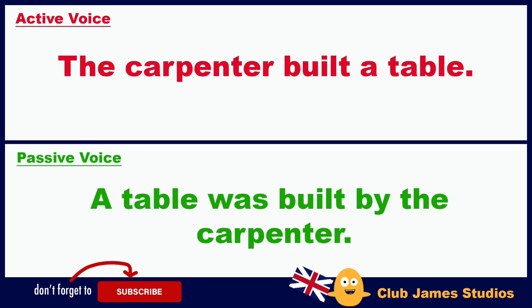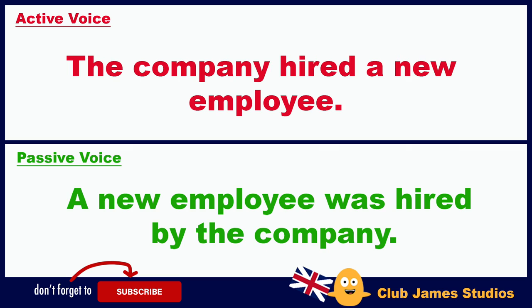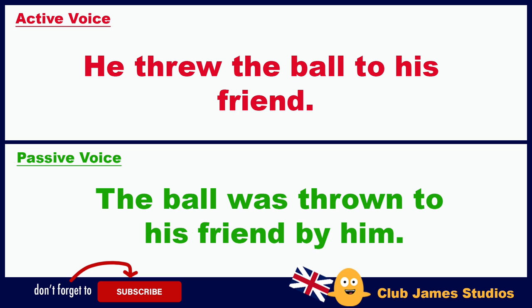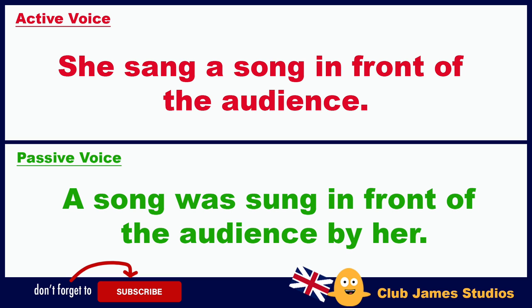The farmer planted the crops. / The crops were planted by the farmer. The carpenter built a table. / A table was built by the carpenter. The company hired a new employee. / A new employee was hired by the company. He threw the ball to his friend. / The ball was thrown to his friend by him.